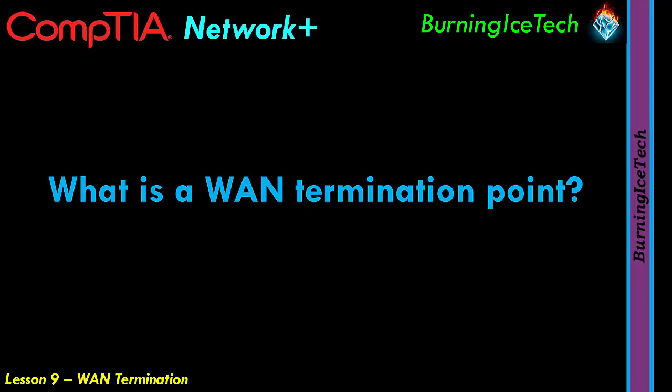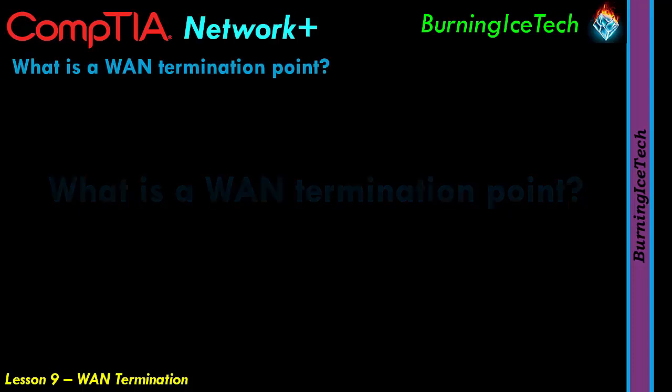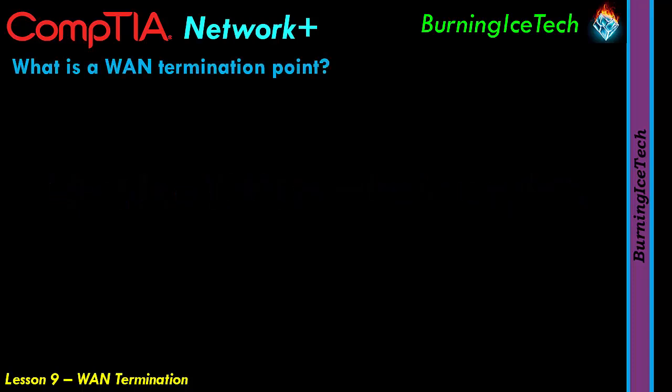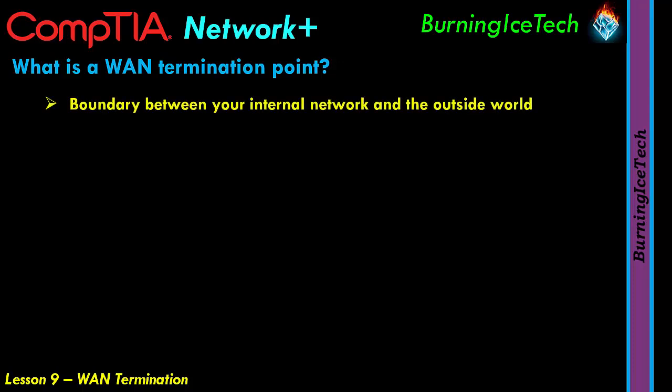Alright, let's start by asking: what is a WAN termination point? A WAN termination point is basically the point where your provider's network stops and where yours starts, if I have to give you the short version.